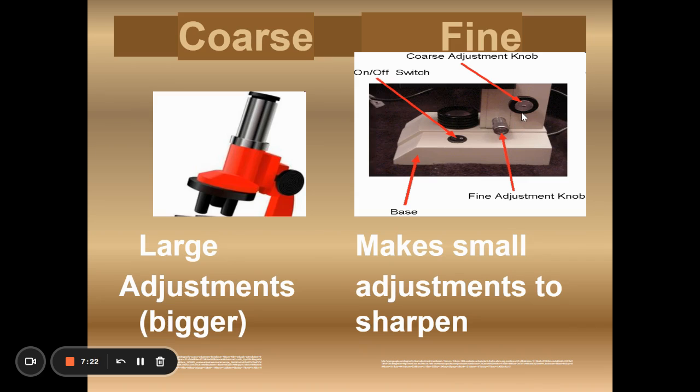So the coarse adjustment knob makes large adjustments. Most of our microscopes, when you move the coarse adjustment knob, it moves your body tube. But some of them, when you move the coarse adjustment knob, it actually moves the stage.